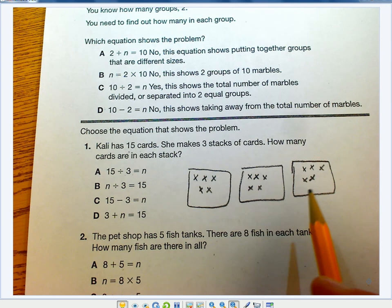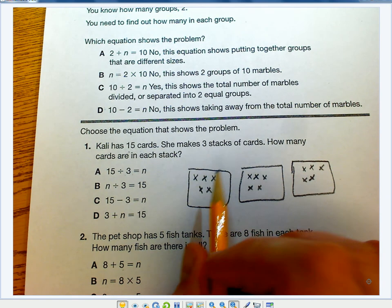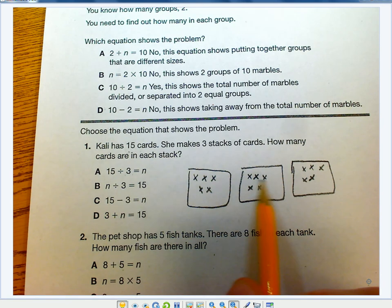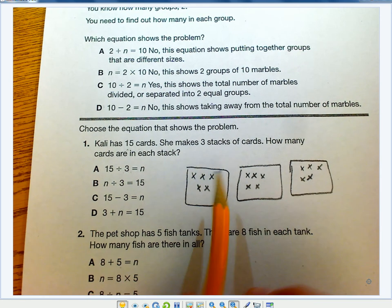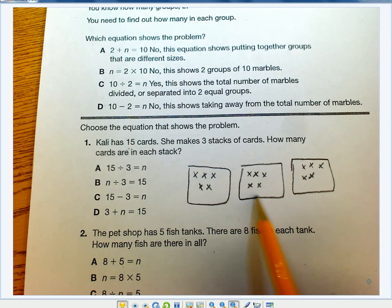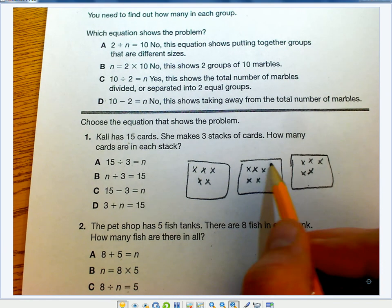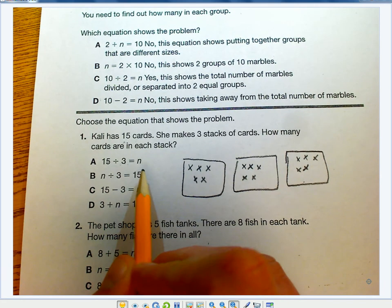So those are my 15 cards that I put in three stacks. I know I have five cards in each stack. So I'm going to go ahead and look over here and see which one of these problems has to do with my picture here. So it looks like I have 15 cards that I divided into three stacks to get five, and five was my unknown, so that's going to be my n. So 15 divided by 3 equals n. That one would work.